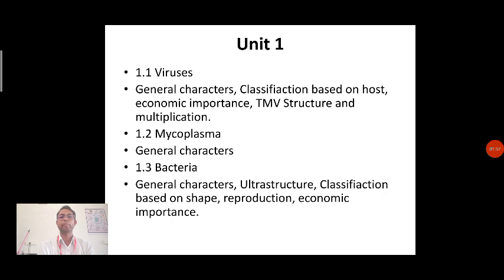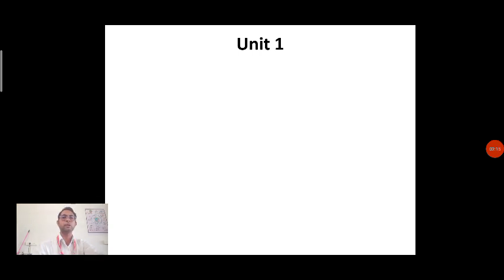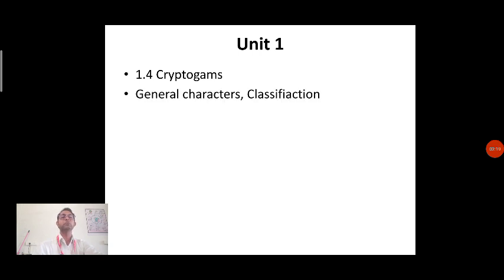Related to mycoplasma, we are going to discuss its general characteristics. The third parameter included in the syllabus is bacteria. For bacteria, we are going to concentrate on the general structure, ultrastructure, classification based on shape, reproduction, and economic importance of the bacterial cell. The last point in unit number one is cryptogames — general characteristics and classification.